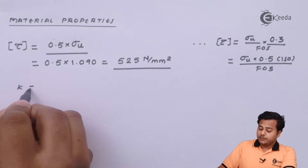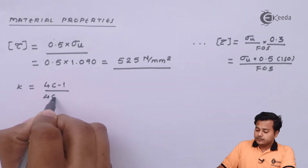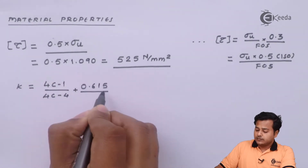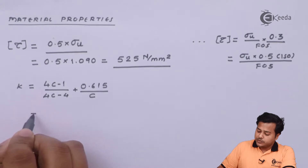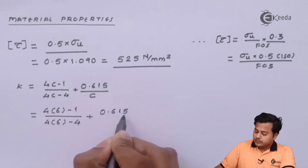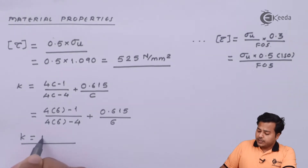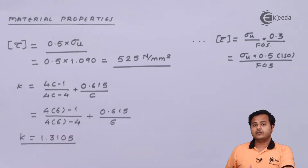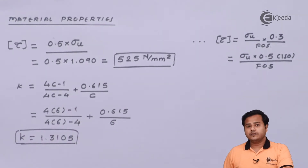The next important factor is the Wahl's factor, which is given by a specific formula where C is the spring index. We have been given spring index equal to 6. After substituting the value, the Wahl's factor comes out to be 1.3105. Since it is a ratio of numbers, there is no unit for that. These are two important factors we are going to use for further design.